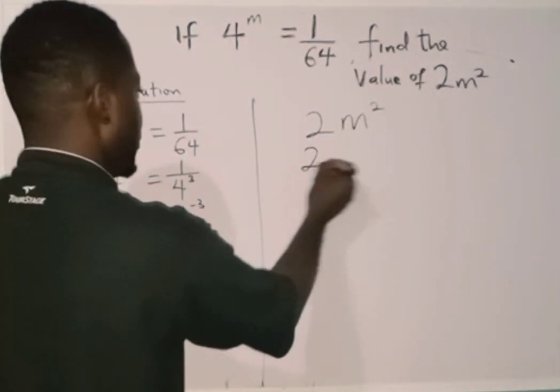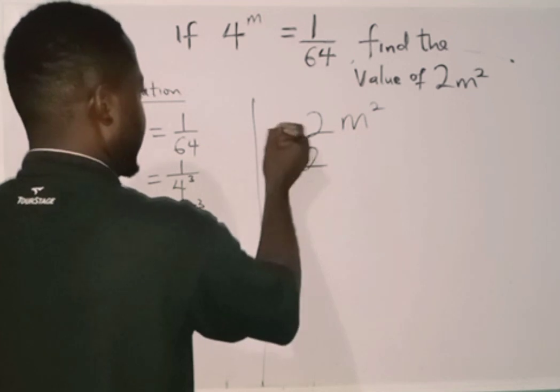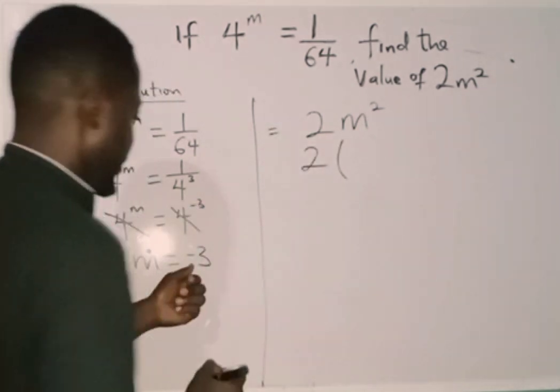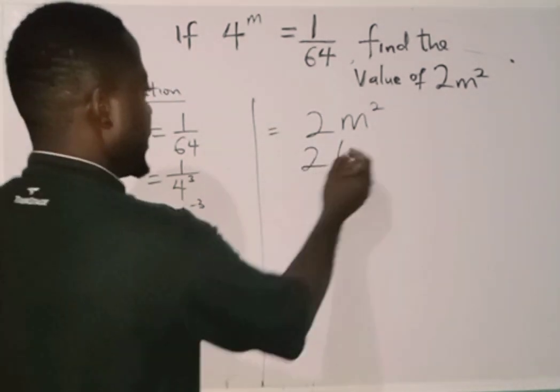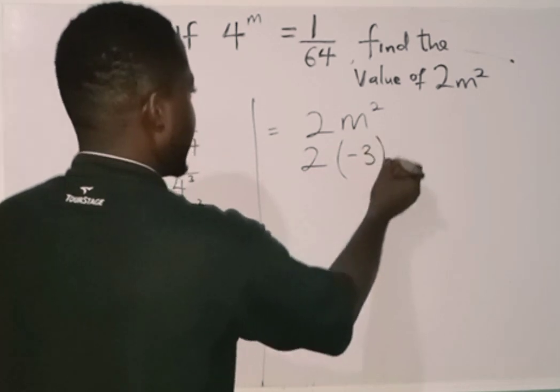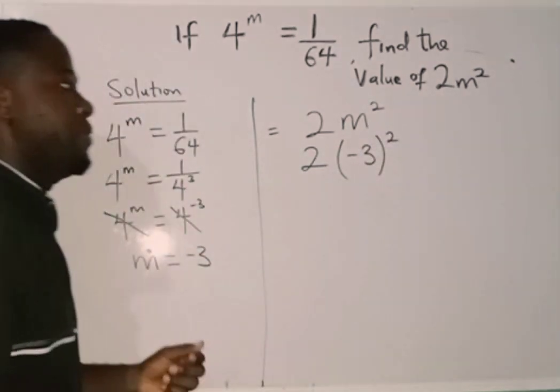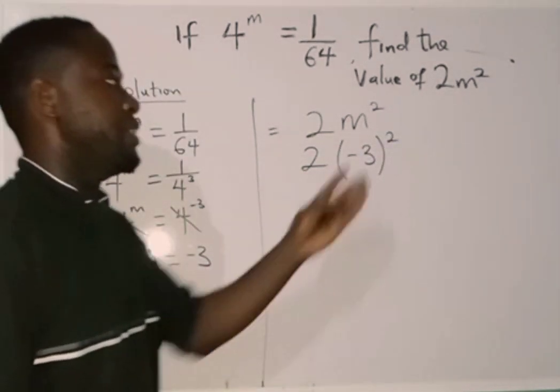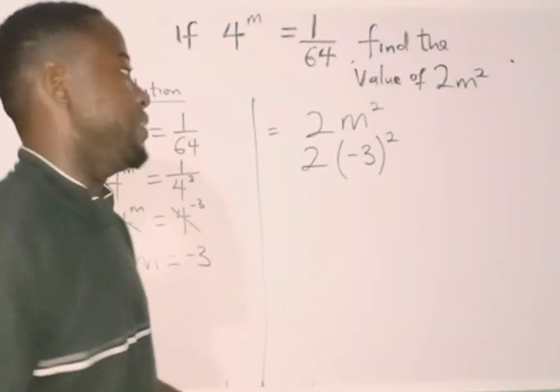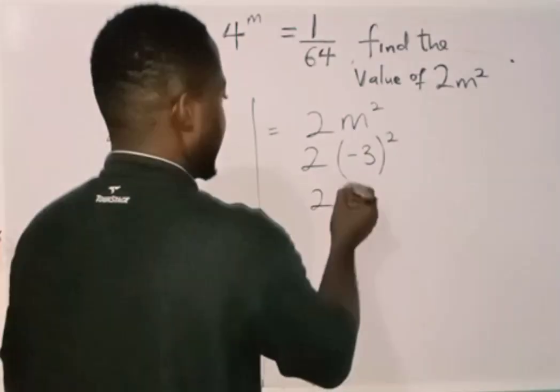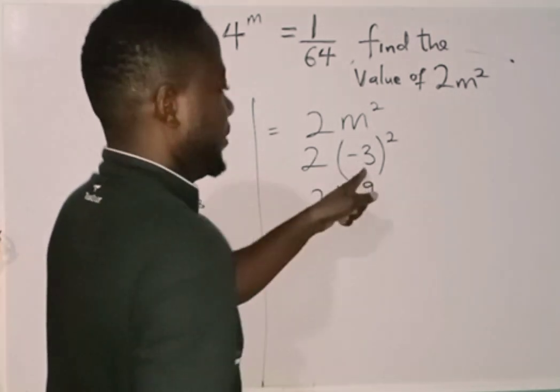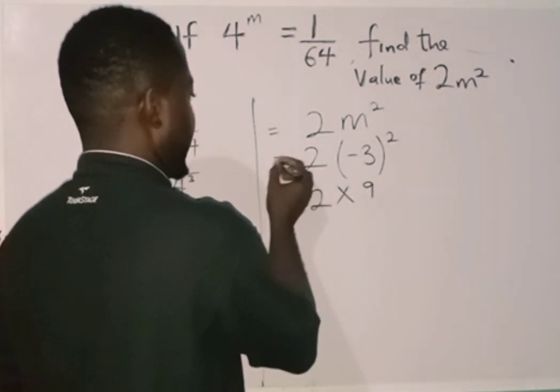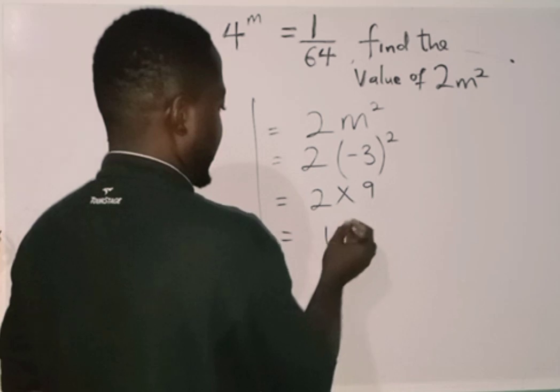So I will now have 2 times minus 3 squared. Minus 3 will replace m now. We have minus 3, then raised to power 2. Minus 3 raised to power 2, that's minus 3 times minus 3, and that's going to give us 2 multiplied by 9. Then my final answer is going to give me 18.